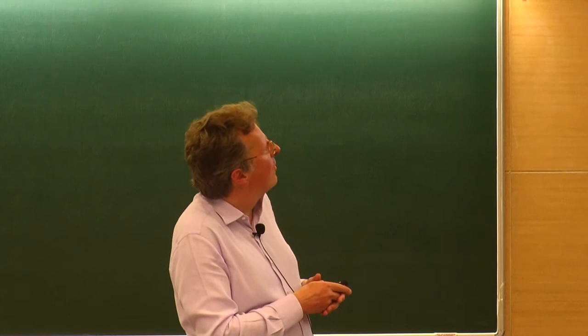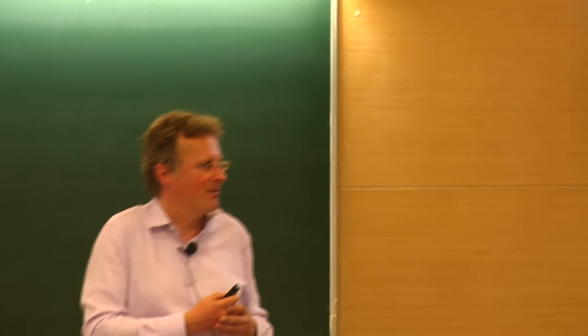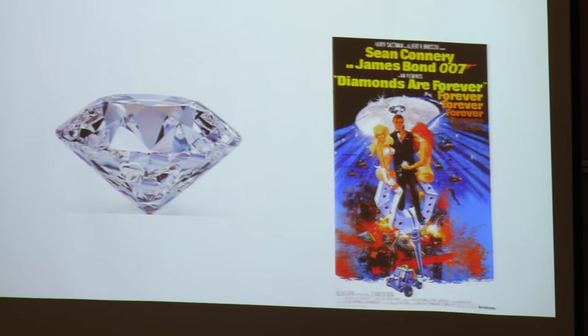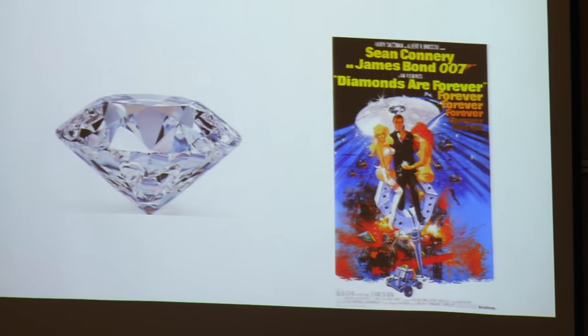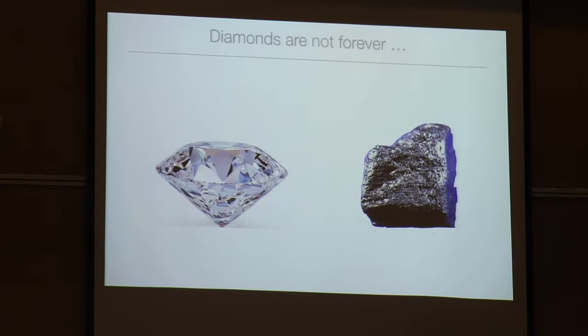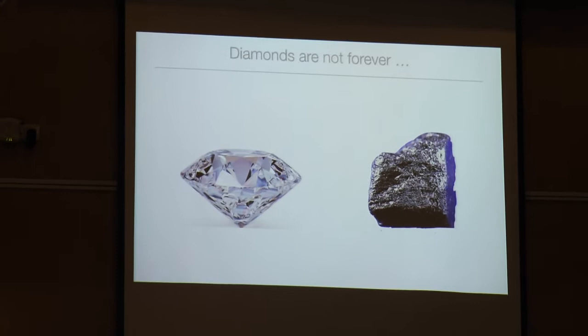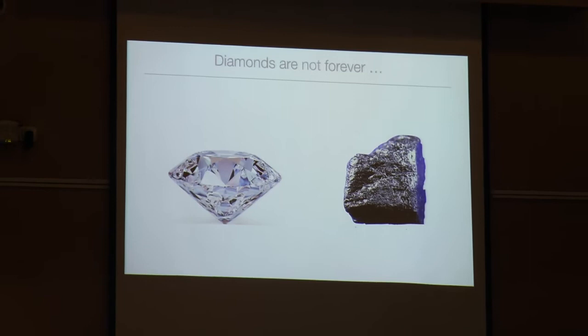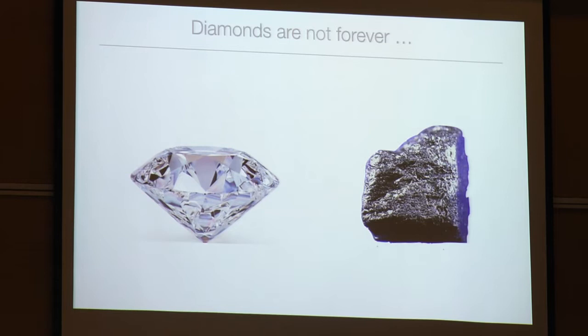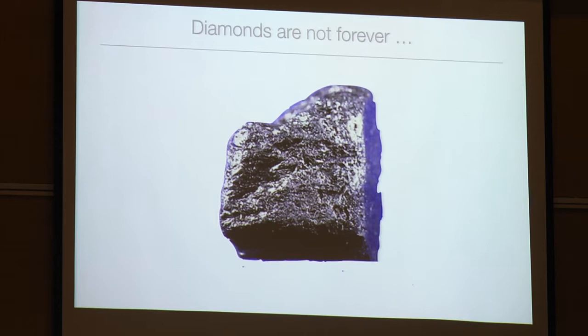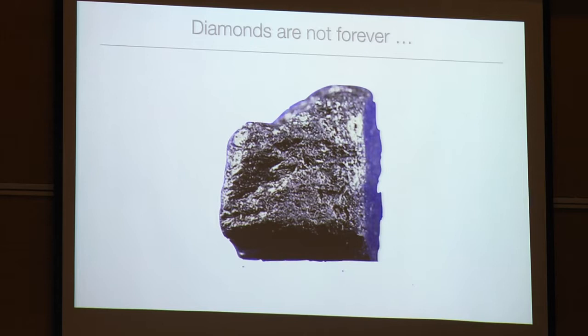The story for spatial coupling begins with a physics analogy. Consider the movie title 'Diamonds Are Forever' — actually, diamonds are not forever. Diamond is a metastable form of carbon; at the pressures and temperatures we experience, it is not the lowest-energy configuration and will eventually convert to graphite, though the half-life is extraordinarily long. The key point is that metastable means it's not the lowest energy configuration, so eventually the system will go to the stable state.